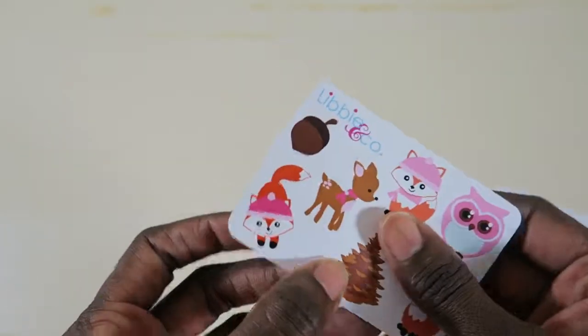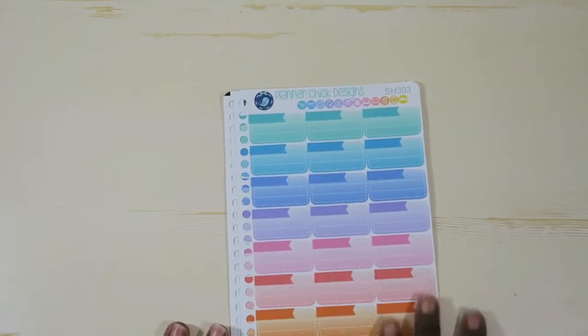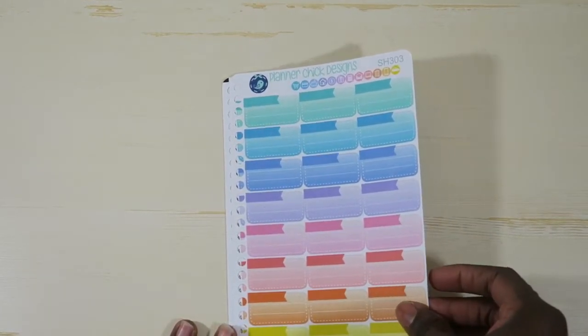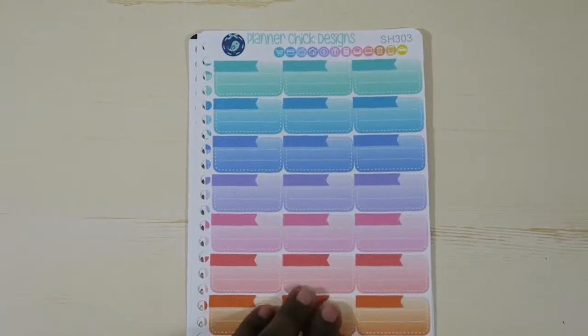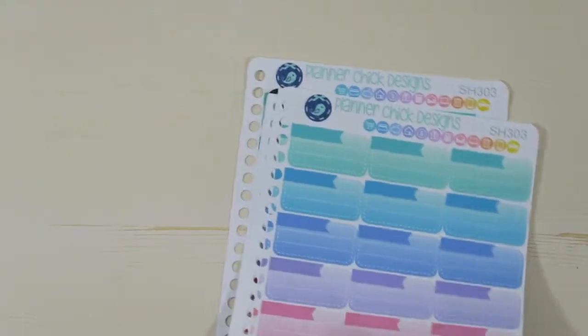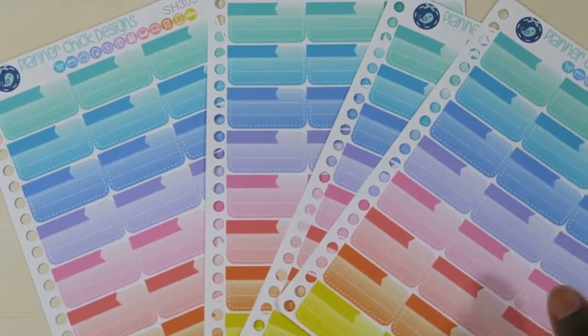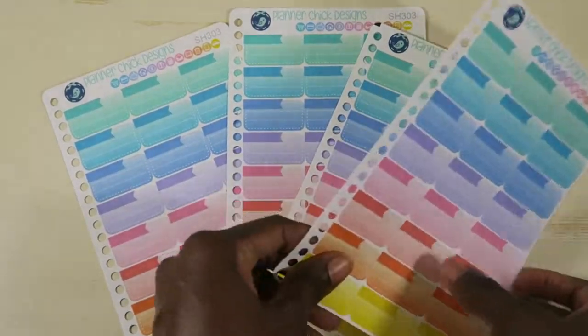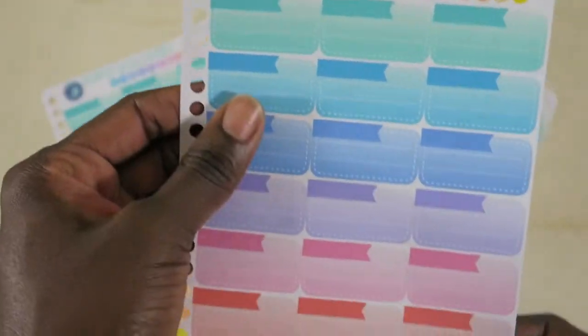The other sticker company, this is my first time ordering from her, is called Planner Chick Designs. She has Two Dollar Tuesdays and each of these sheets were $2. I ordered two for me and then two for my friend in the pastels. Again, I think these would work really well with the Inkwell Press.